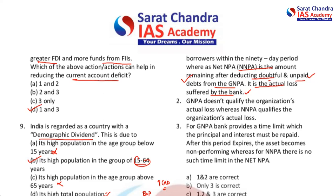GNPA doesn't qualify the organization's actual loss, whereas NNPA qualifies the organization's actual loss. For example, someone who can't repay in 90 days may start repaying once their business picks up — that's what GNPA tries to address. In NNPA, after removing doubtful and unpaid debts, what remains — like the cases of Vijay Mallya or Nirav Modi — are the actual losses because those individuals have left the country and have no assets to liquidate to collect dues.